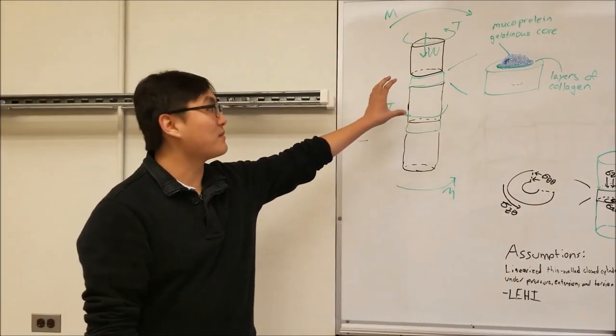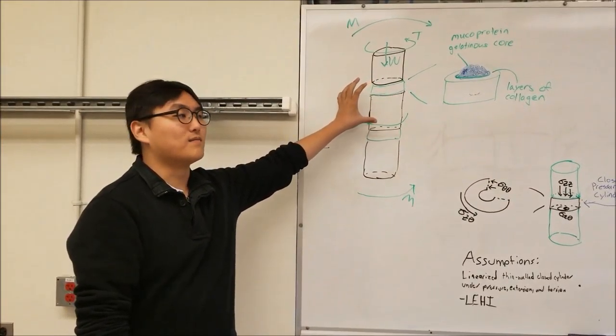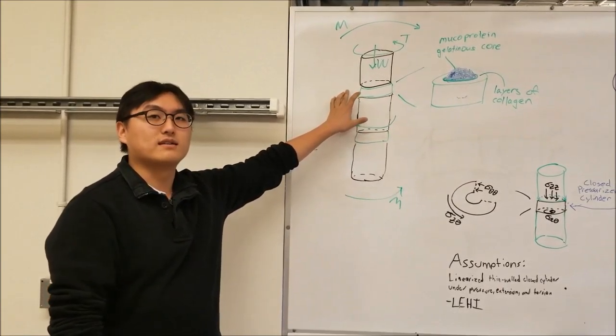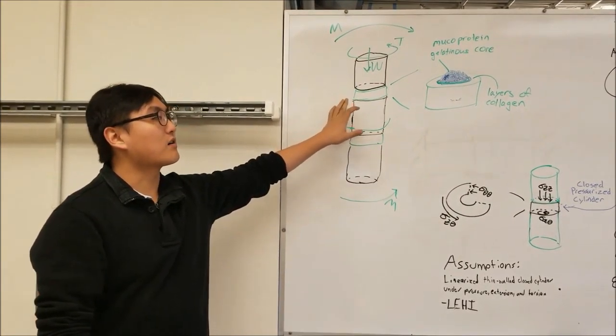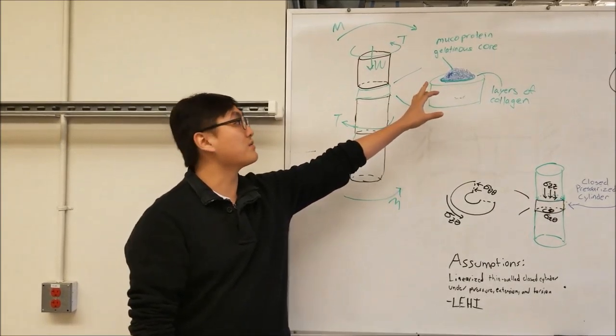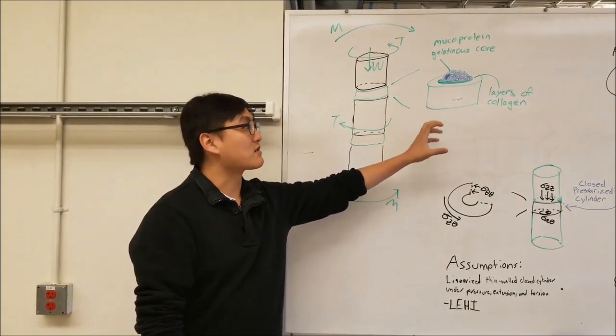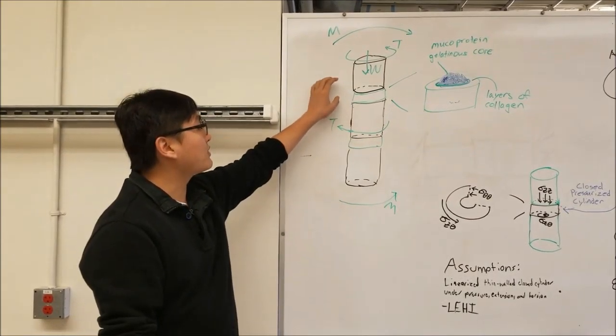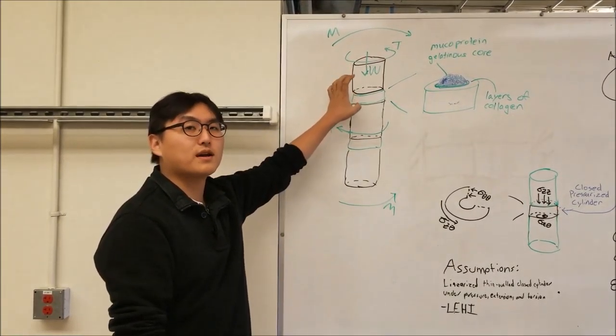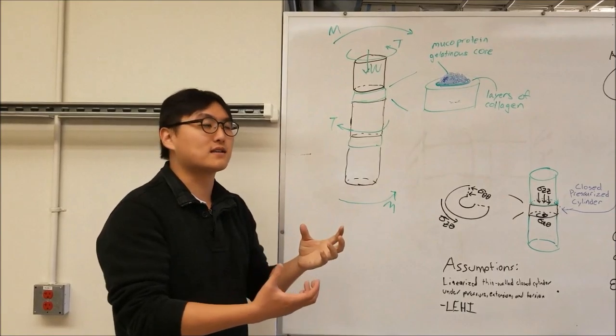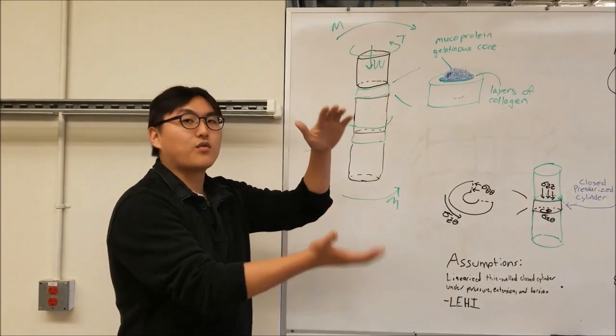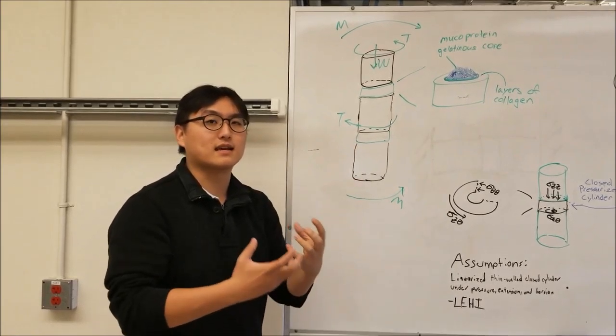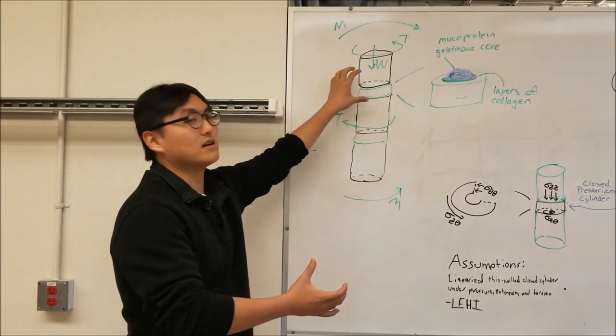The spine is made up of segments called the vertebrae, with other segments called vertebral discs in between. These discs are made up of a mucoprotein gelatinous core surrounded by layers of collagen, and they act between the bony vertebrae as shock absorbers, absorbing any shock forces between the vertebrae preventing damage. They also act as ligaments, connecting the different segments of the spine so that the spine can move together.